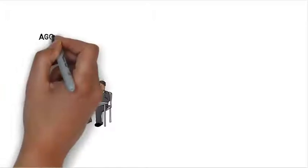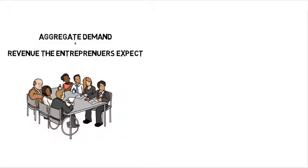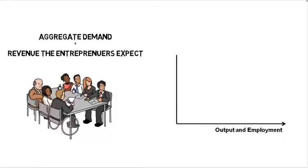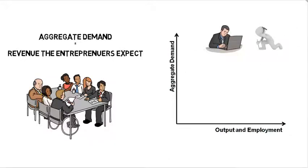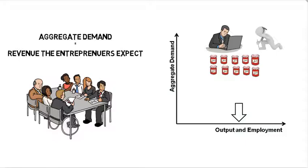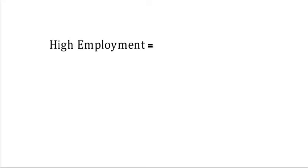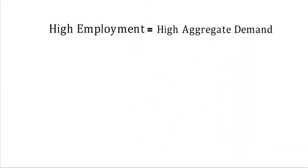We know that aggregate demand is nothing but the sales proceeds or revenue that the entrepreneurs expect. Think about this: if I plot output and volume of employment on the x-axis and aggregate demand on the y-axis, an increase in employment — the number of jobs in the economy — means output will also increase, so I can plot them together. If overall employment is high, then the expectation about the amount of revenue that the entrepreneurs will receive will also be very high.